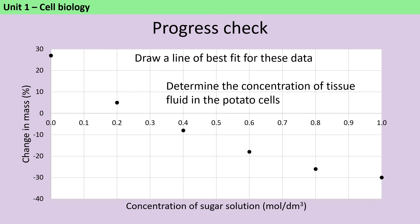One thing that you should be aware of is that for the osmosis required practical, you're always expecting to see a graph like this, in which you have some data above the x-axis, and that represents the pieces of potato that have increased in mass, and then some data below the x-axis. So those are the pieces of potato that have decreased in mass. And what we would expect is that where the concentration of the solution and the cells is equal, then there will be no change in mass at all.